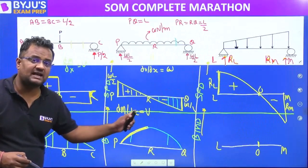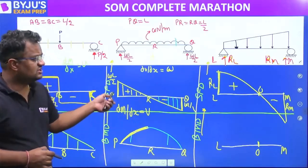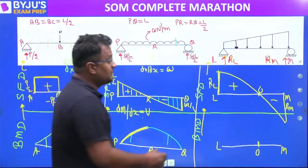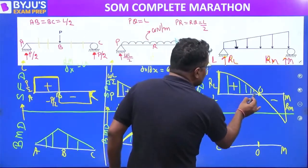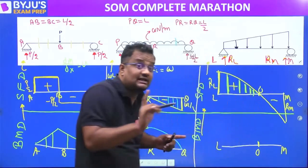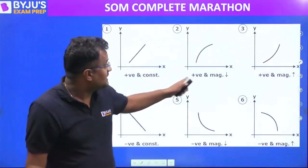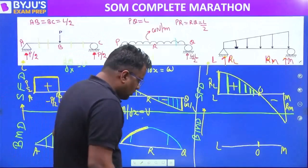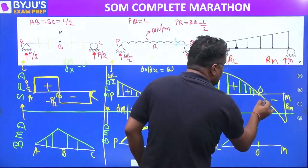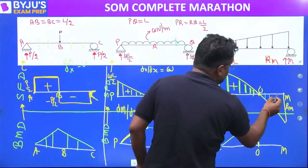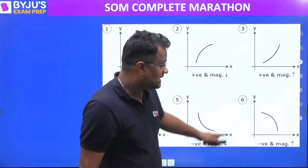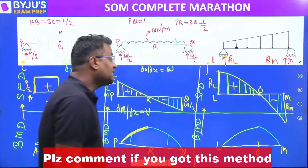Bending moment slope equals shear force. Shear force from L to O is positive but decreasing — positive decreasing — graph number two. From O to M, shear force is negative but increasing in magnitude — negative increasing — graph number six.